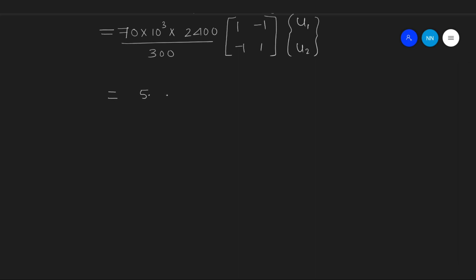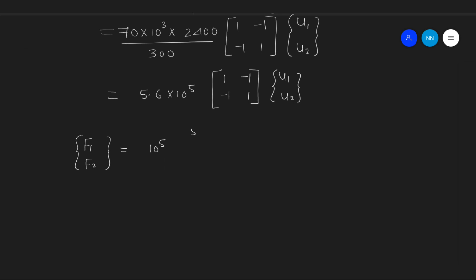The value works out to 5.6 × 10⁵ × [1, -1; -1, 1] × [U1, U2]. Rewriting with 10⁵ as a common factor, the finite element equation becomes: [F1, F2] = 10⁵ × [5.6, -5.6; -5.6, 5.6] × [U1, U2]. Let this be equation number 1.